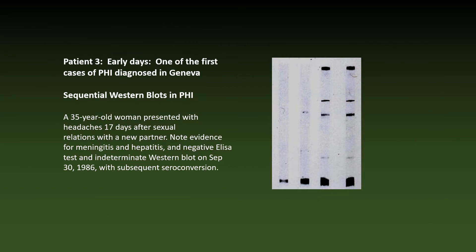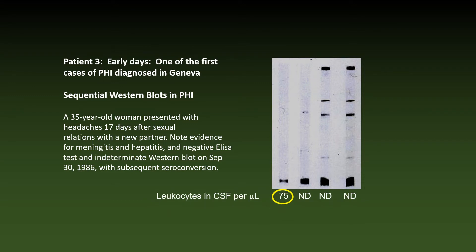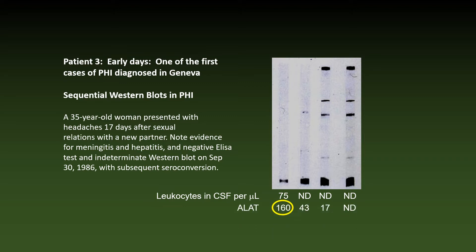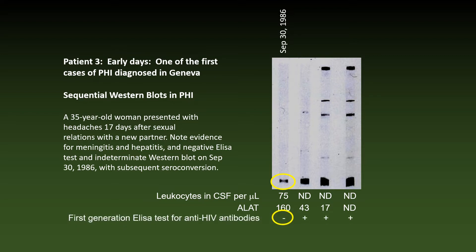A 35-year-old woman presented with headaches and rash 17 days after sex with a new partner. Note the elevated number of leukocytes in the cerebrospinal fluid — evidence for meningitis — and elevated transaminases, evidence of hepatitis. The first-generation ELISA antibody test was negative; however, the P24 antigen was already positive.